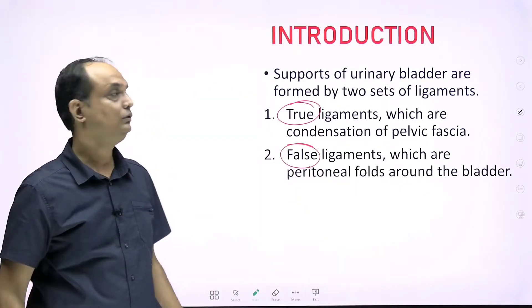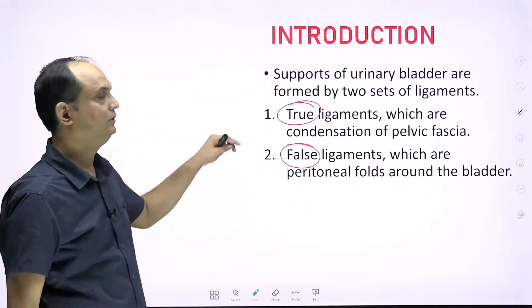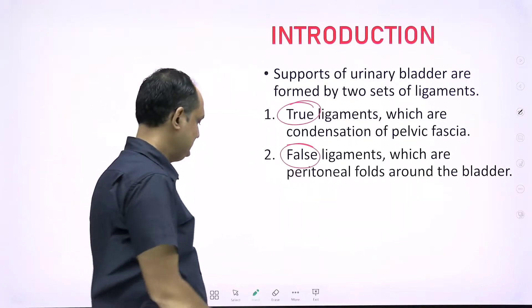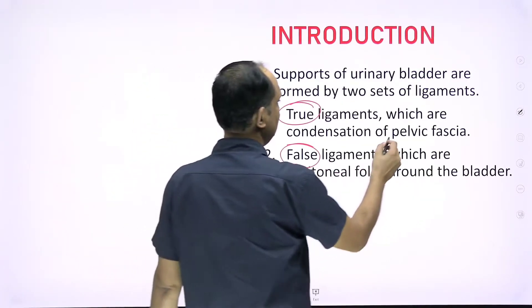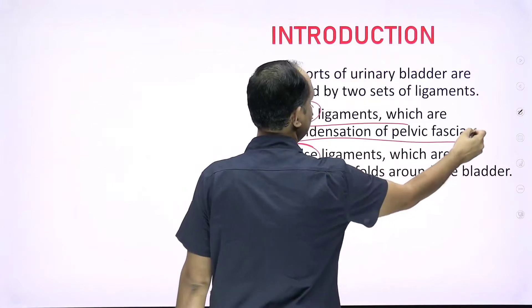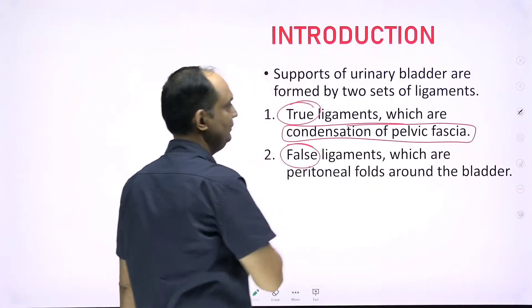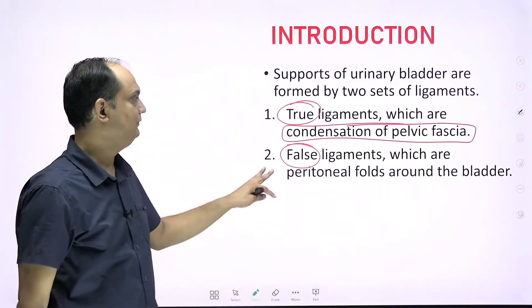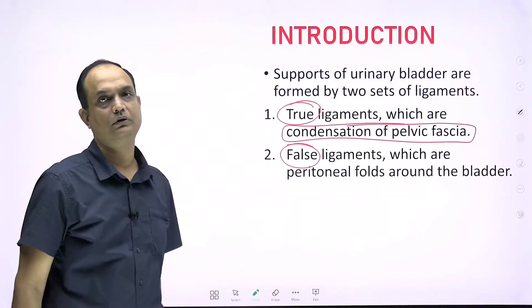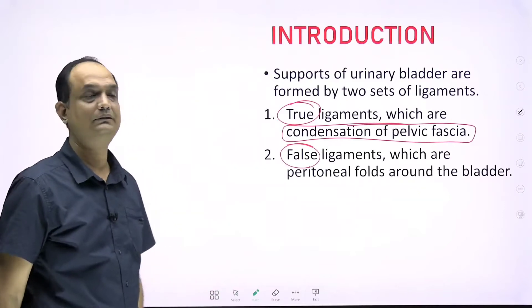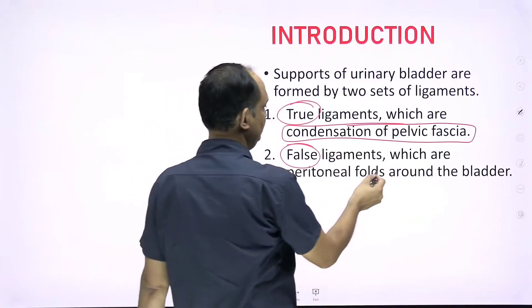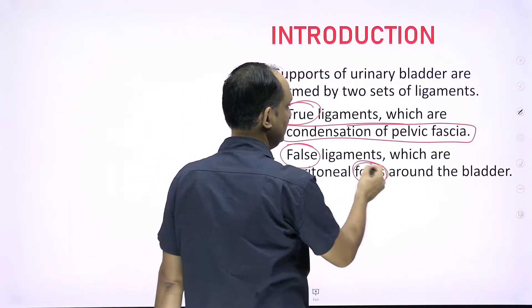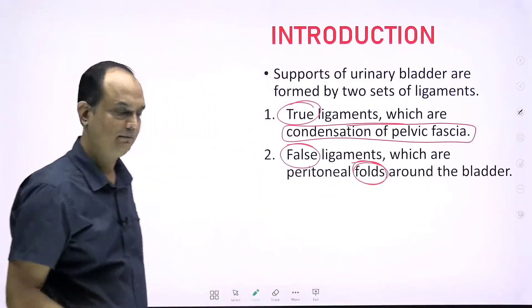The true supports are also known as the true ligaments, and these ligaments are nothing but the condensation of the surrounding fascia present in the pelvis. The false supports, or false ligaments, are very delicate folds of the peritoneum which surround the urinary bladder.